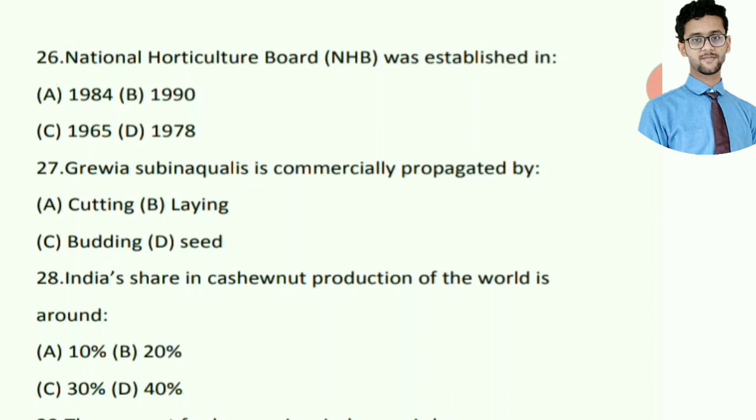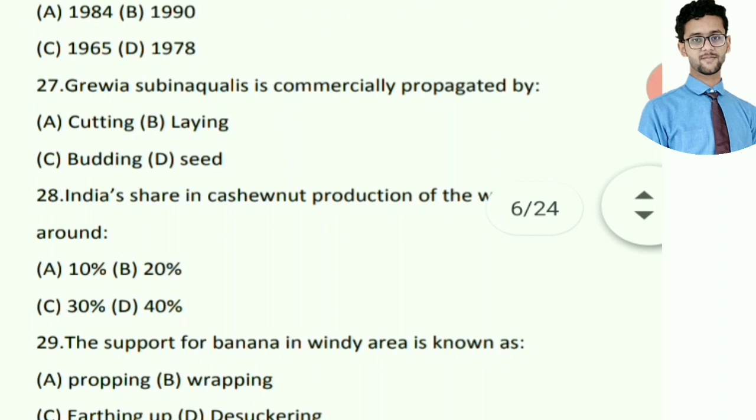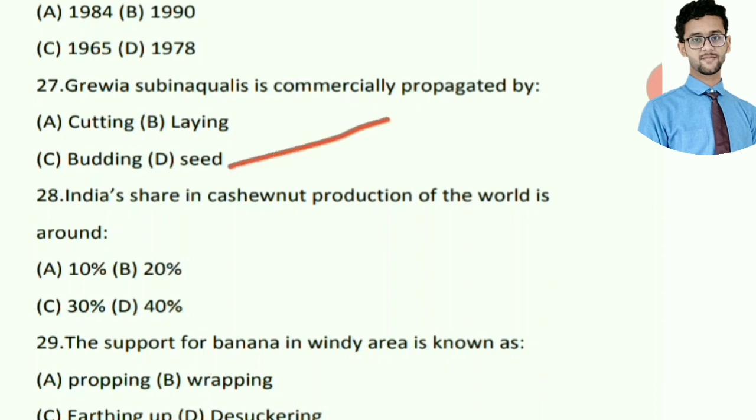Gravia sabni coils is commercially propagated by — right answer D: seeds.